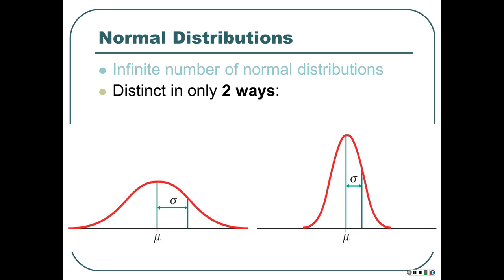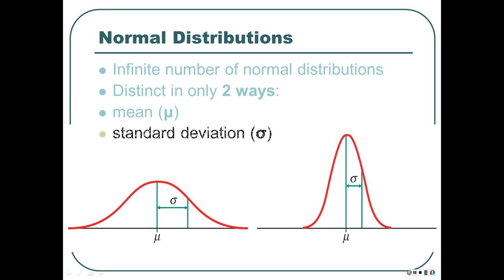If it's a truly normal distribution, there are only really two differences between any normal distribution and any other normal distribution. Each normal distribution can have a particular mean — the middle — and when we draw it, it's the middle vertical line. And each one can have a different standard deviation. Now, this is a population thing or a theoretical thing. Population meaning an infinite number, or all possible something or others. Or it can mean a theoretical mathematical thing that doesn't exist in the real world, and that's what we really mean most of the time. It's a model.